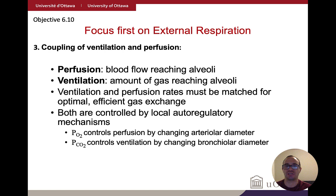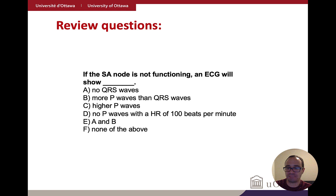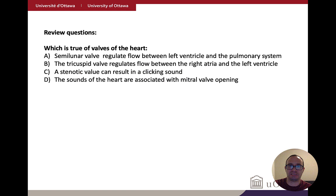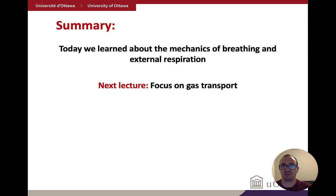To summarize, external respiration — movement of gases from the lungs into the bloodstream — is impacted by three main factors: partial pressure gradients, thickness and surface area of the respiratory membrane, and ventilation-perfusion coupling. Today's lecture focused on the mechanics of breathing and external respiration. Next, we'll cover gas transport and then internal respiration. Review these concepts before the next lecture.